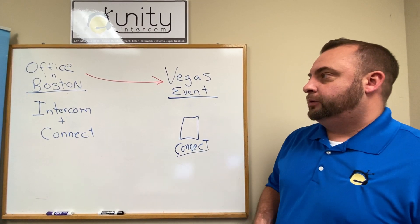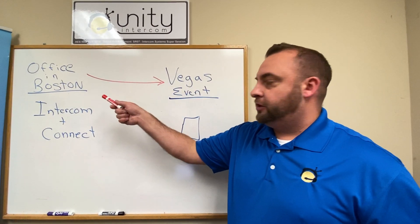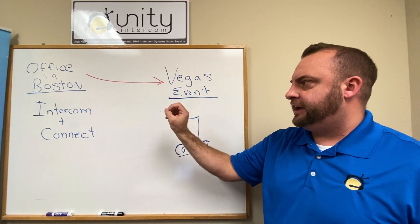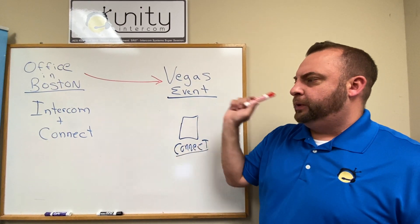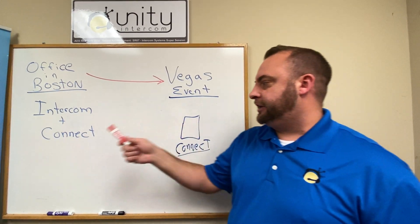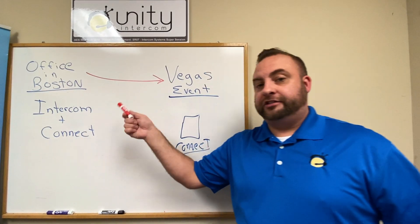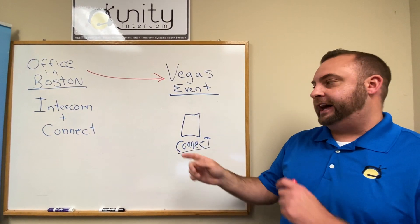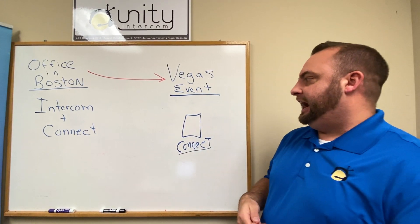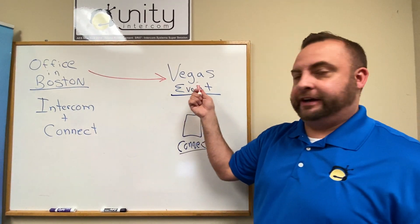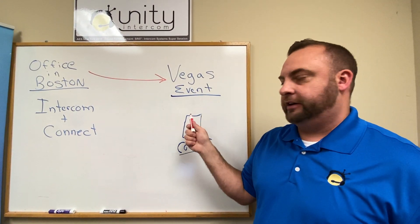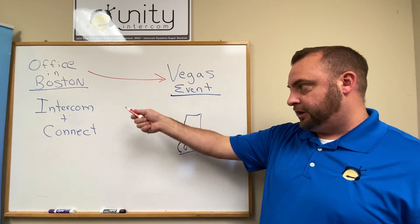So what we're going to do instead is leave our Unity Intercom in Boston at the office, all set up. The port forwarding's been set up, I've got good internet there, we can hit it on cellular data. What I'm going to do differently is add our product Unity Connect to the same Mac computer. Unity Connect is going to allow me to send and receive audio from various locations. So here's what we do — I'm going to roll out to Las Vegas and bring a Mac computer with me, but that Mac computer is going to have Unity Connect on it, not Unity Intercom. Unity Intercom is going to stay back home.